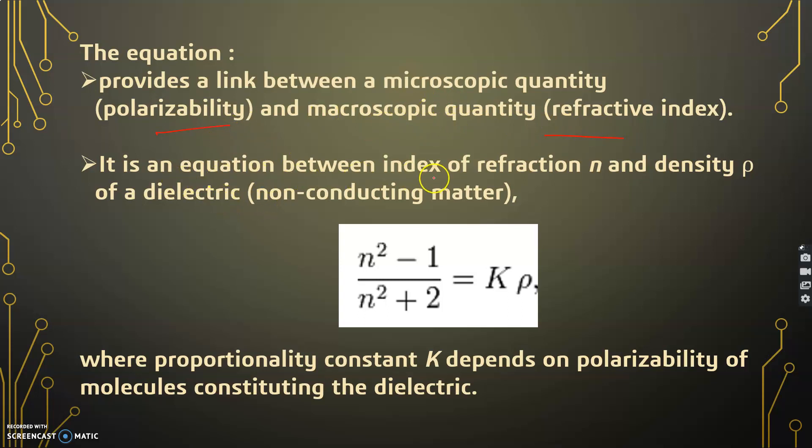It is an equation between index of refraction eta and density rho of a dielectric, and is given by this equation where K is the proportionality constant and it depends on polarizability of the molecules constituting the dielectric.